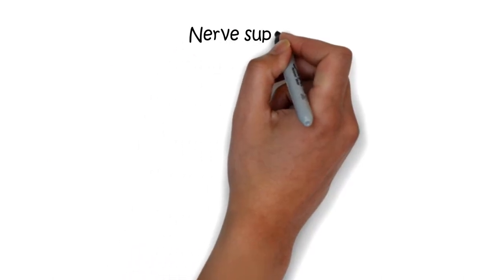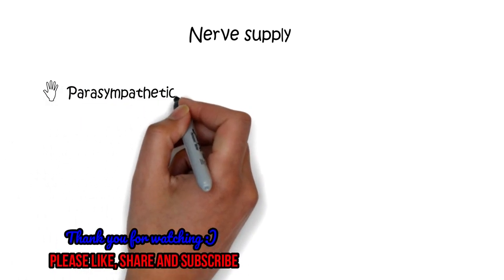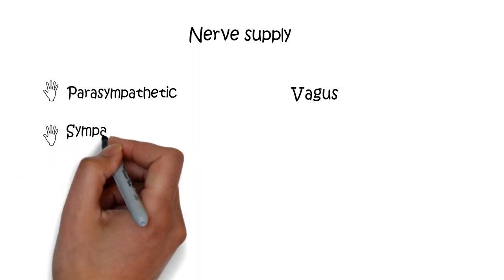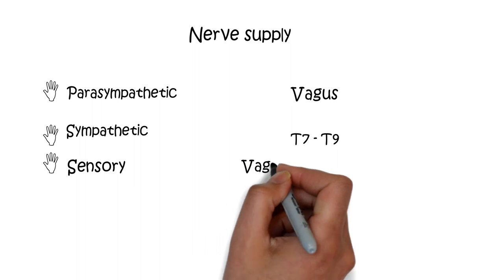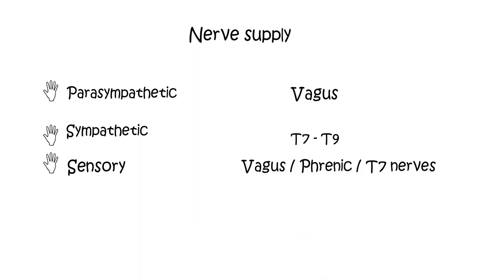The nerve supply of the gallbladder includes parasympathetic, sympathetic, and sensory innervation. Parasympathetic innervation via the vagus nerve causes contraction of the gallbladder and secretion of bile into the cystic duct. Sympathetic nerve supply occurs via thoracic T7, T8, and T9 nerve roots. Sensory innervation occurs through the vagus nerve, phrenic nerves, and the thoracic T7 sympathetic nerves.